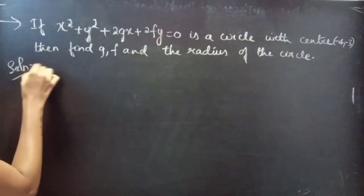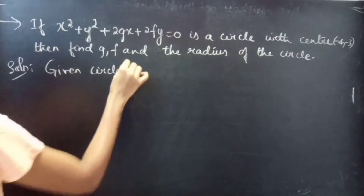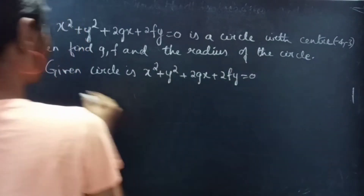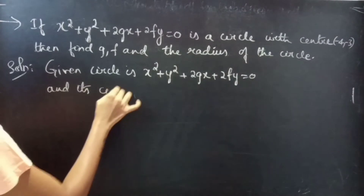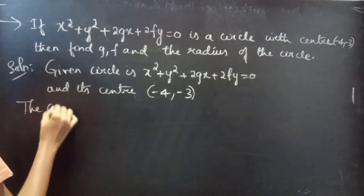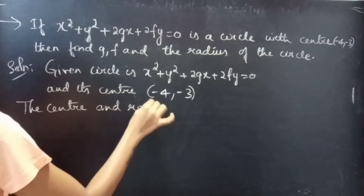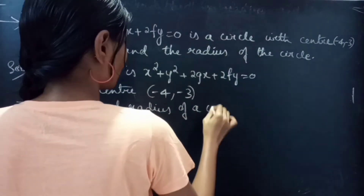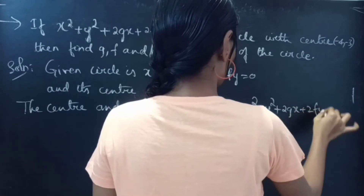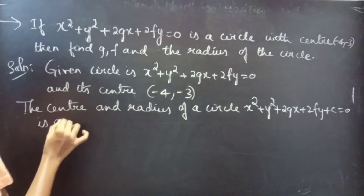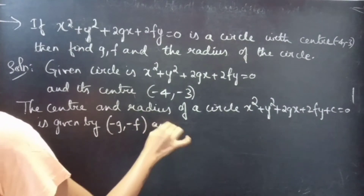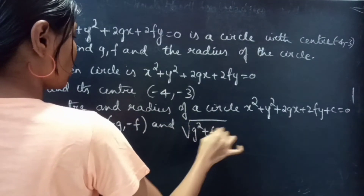Solution: the given circle is x squared plus y squared plus 2gx plus 2fy equals to 0, and its center is (minus 4, minus 3). We know that the center and radius of a circle x squared plus y squared plus 2gx plus 2fy plus c equals to 0 is given by center (minus g, minus f) and radius equal to square root of g squared plus f squared minus c.